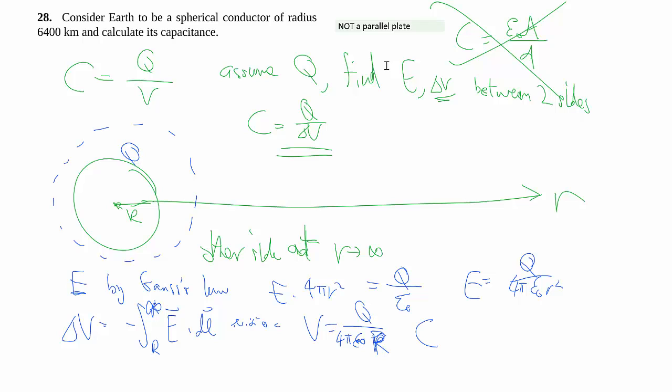And so you take your C is equal to Q over V, and it basically becomes Q over Q over 4 pi epsilon times R. So cancel cancel, the bottom of the bottom becomes the top. We're no longer dependent on Q, which is typical of such approaches.